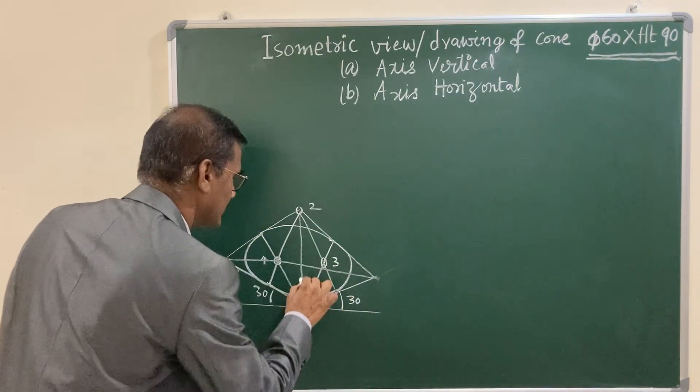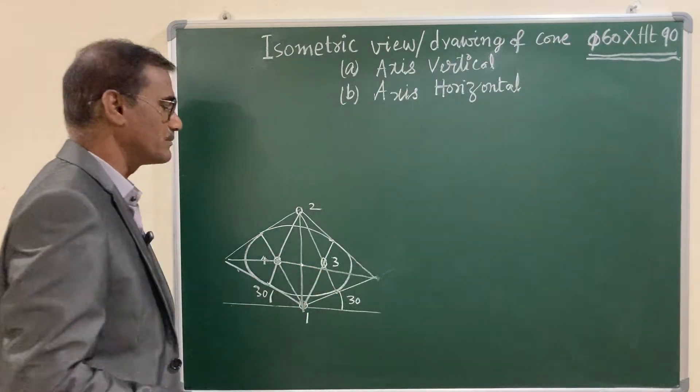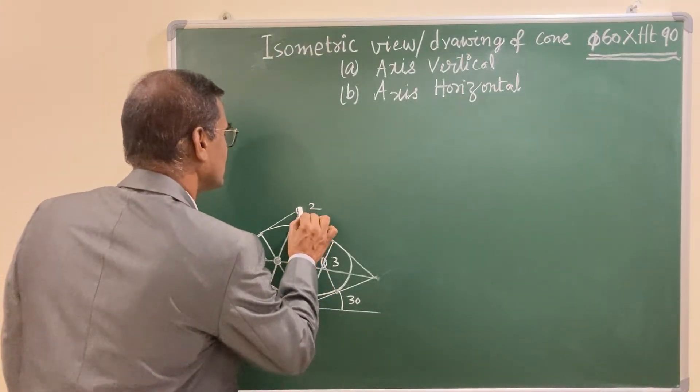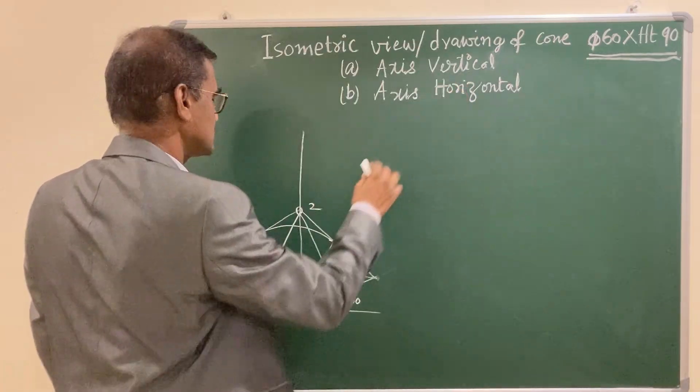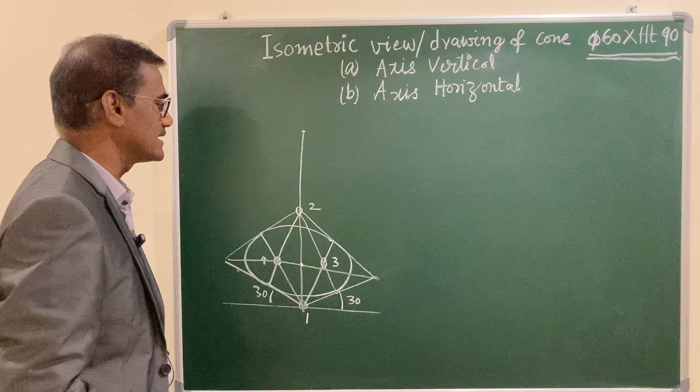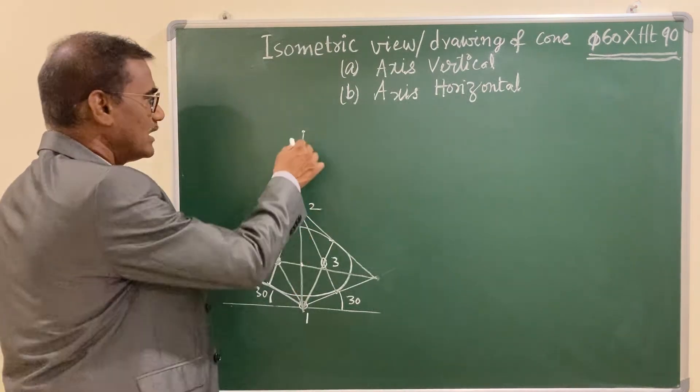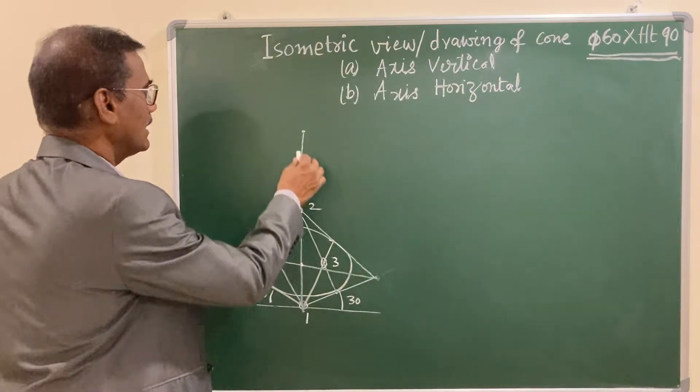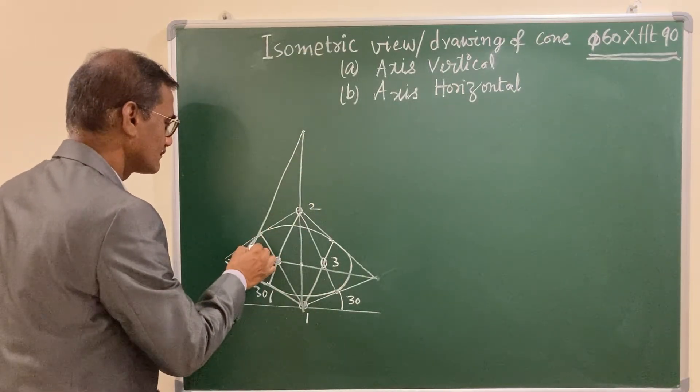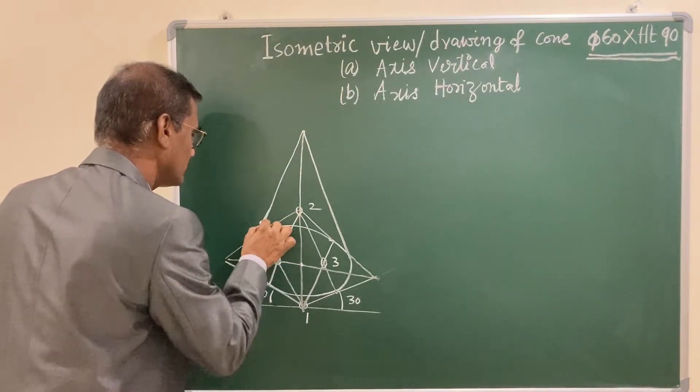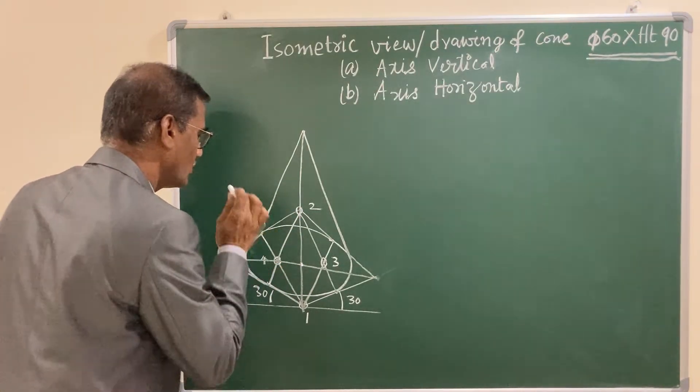Now join longer diagonal and shorter diagonal. The intersecting point is your midpoint. From this midpoint, let us measure the given height, that is 90 mm. Locate the apex at a distance 90 mm and join this apex. Draw a line tangent to the ellipse, and you are going to get the required cone.